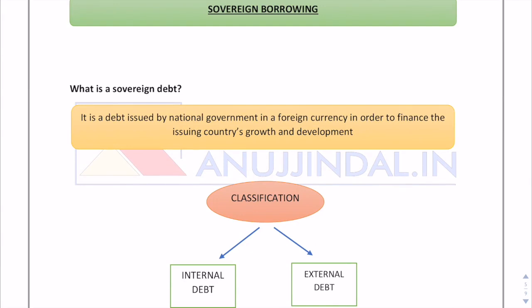The first question is: what is sovereign debt? Any debt is a claim where one party owes another. In the case of sovereign debt, countries come into play — it is a debt issued by the national government in a foreign currency in order to finance the issuing country's growth and development.